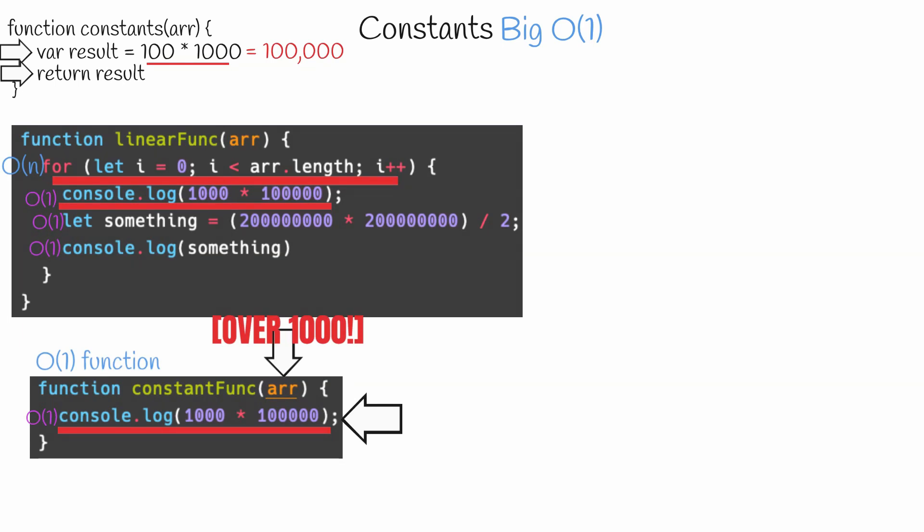Well, this brings us to our last important note. In Big O, we have a growth hierarchy, which looks something like this.